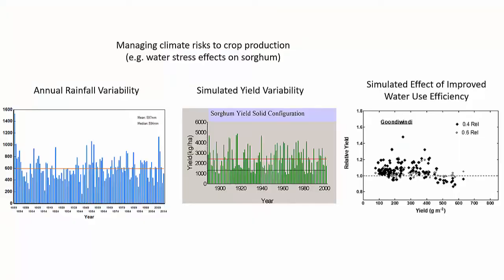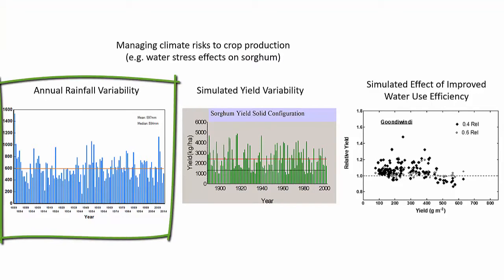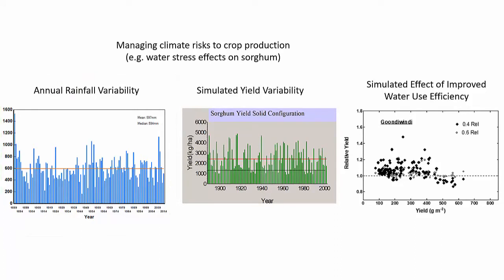One of the things that we do is use a model to simulate over a period of time. We take historical records of rainfall. In Australia there's high rainfall variability, so from year to year you've got extreme variability of wet and dry seasons, and you can see that happening all around you.